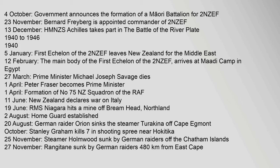1940–1946. 1940, 5 January: First echelon of the 2NZEF leaves New Zealand for the Middle East. 12 February: The main body of the first echelon of the 2NZEF arrives at Maadi Camp in Egypt. 27 March: Prime Minister Michael Joseph Savage dies. 1 April: Peter Fraser becomes Prime Minister. 1 April: Formation of No. 75 NZ Squadron of the RAF. 11 June: New Zealand declares war on Italy. 19 June: RMS Niagara hits a mine off Bream Head, Northland.